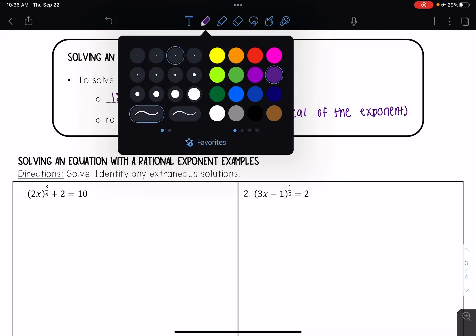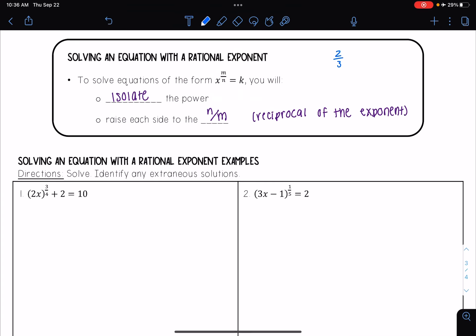So for instance, if I had 2 thirds, the reciprocal would be 3 halves. And when you multiply those, you get 6 over 6, which is equal to 1, which is what we want so that we can cancel that power.